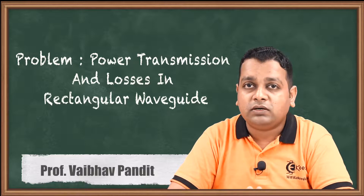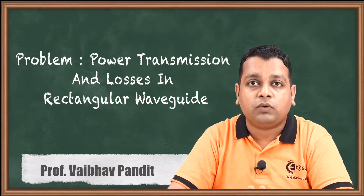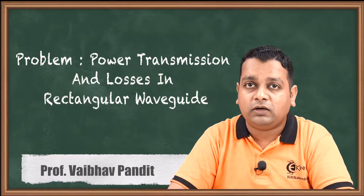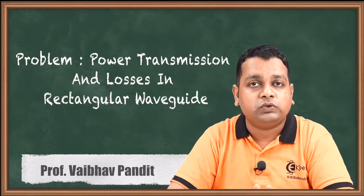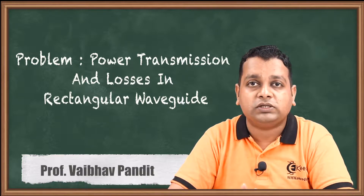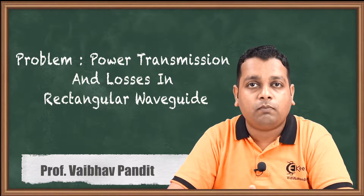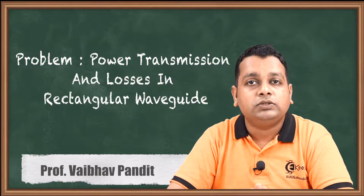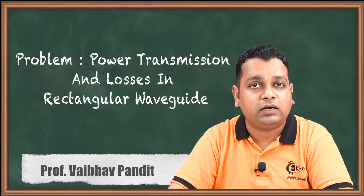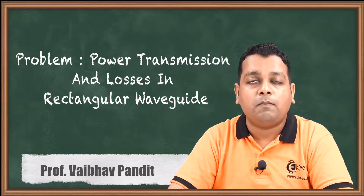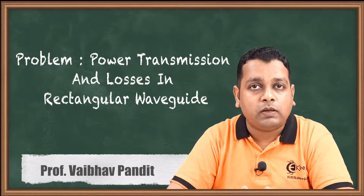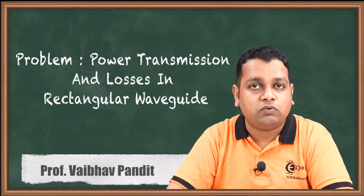We started this chapter with understanding how the parallel plate waveguide can be modified to have a rectangular waveguide of hollow metallic tube. We found solutions with respect to the wave equations for wave propagation of microwaves, and understood propagation with the help of transverse electric mode and transverse magnetic mode, solving two problems each for the corresponding modes of propagation.